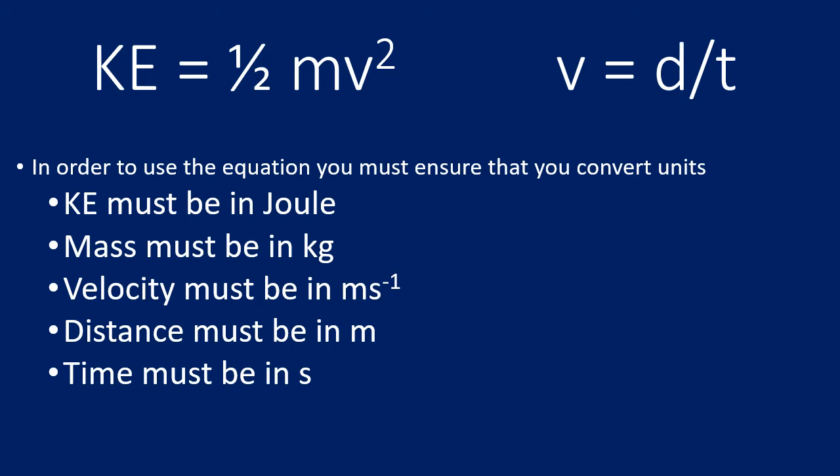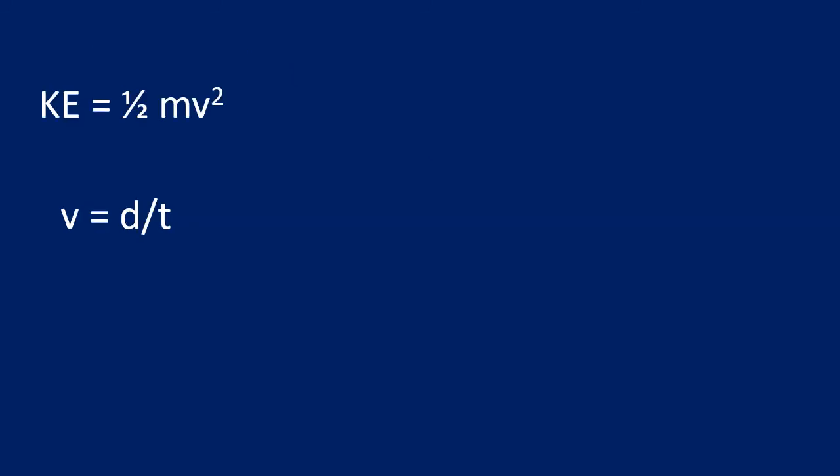Before we begin calculations, we must be very aware of units. The kinetic energy must be in joules, the mass must be in kilograms — this is an area where students often make a mistake, converting to grams instead. Velocity must be in meters per second, distance in meters — sometimes we need to convert from centimeters — and time will be in seconds.